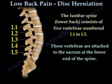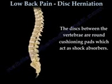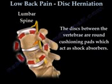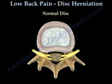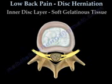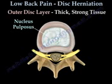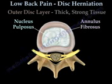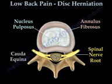These vertebrae are attached to the sacrum, the tailbone, at the lower end of the spine. The discs between the vertebrae are cushioning pads which absorb shock. In a normal disc there are two layers: the soft gelatinous inner layer called the nucleus pulposus, and an outer thick strong layer called the annulus fibrosus. Behind the disc lies the spinal nerve root and the cauda equina.